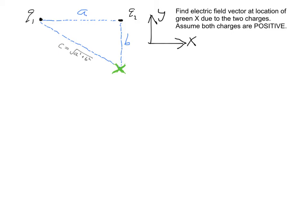Likewise, charge 2 being positive, the electric field due to charge 2 at the location of the green x will point away from charge 2. We don't know the relative magnitudes of those contributions because we don't know how big q1 is relative to q2, so we'll just sketch some arbitrary lengths in there.